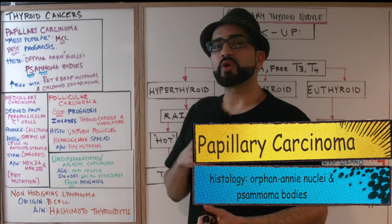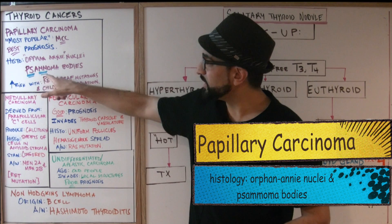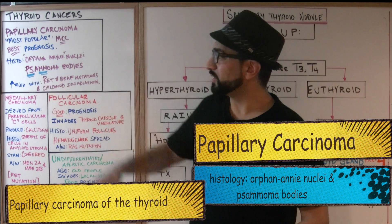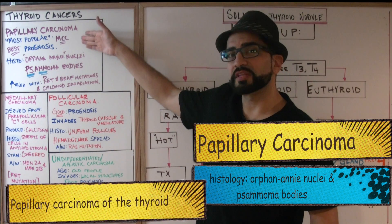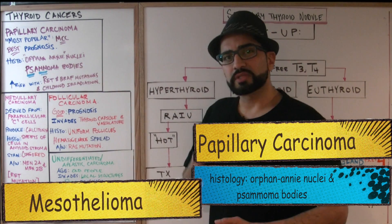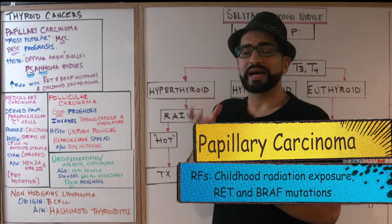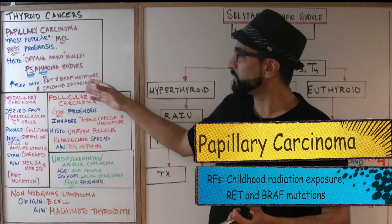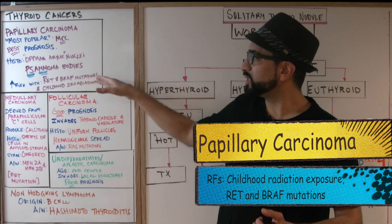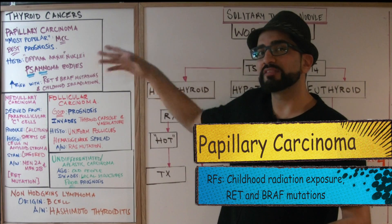On histology, you're going to see orphan Annie nuclei and psammoma bodies. Other conditions that also have psammoma bodies can be remembered with the mnemonic P-S-M-M: P for papillary carcinoma of the thyroid, S for serous adenocarcinoma of the ovary, the first M for mesothelioma, and the second M for meningiomas. In the question stem, it will describe an adult who was exposed to irradiation as a child — increased risk with childhood irradiation. Also, if the patient has a RET mutation or a BRAF mutation, high chances are you're dealing with papillary carcinoma of the thyroid.